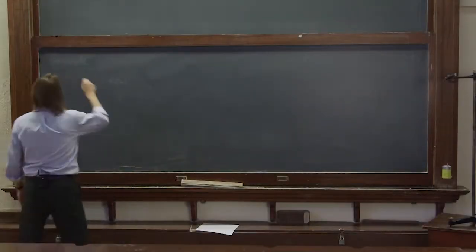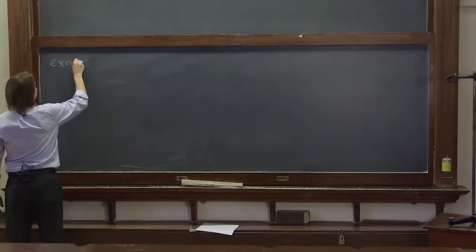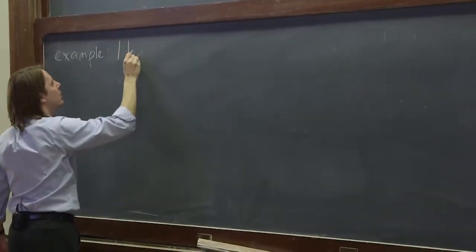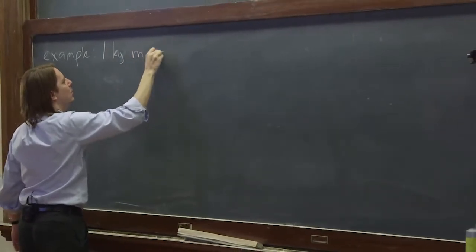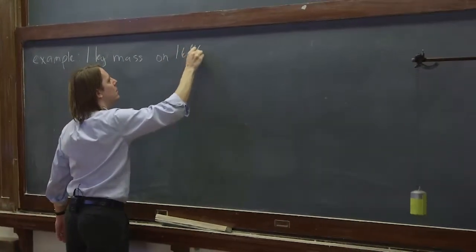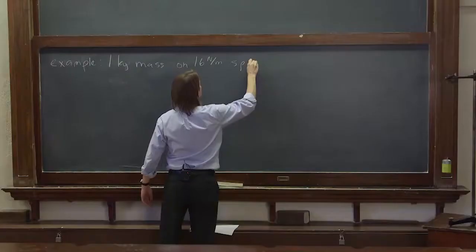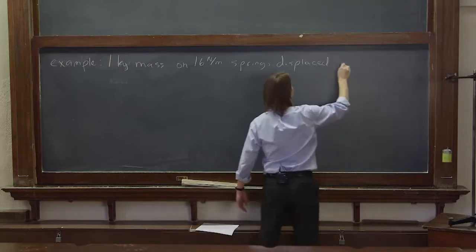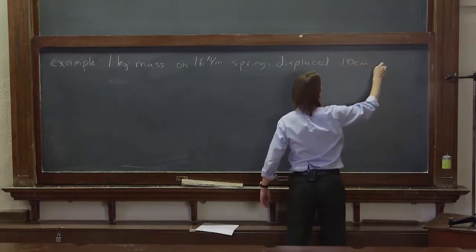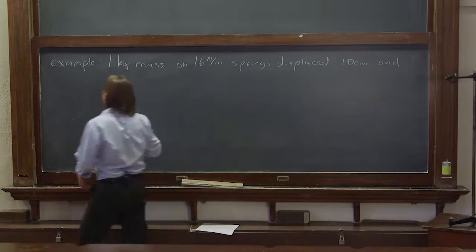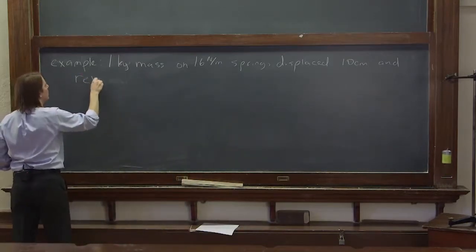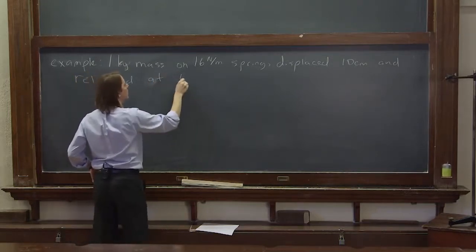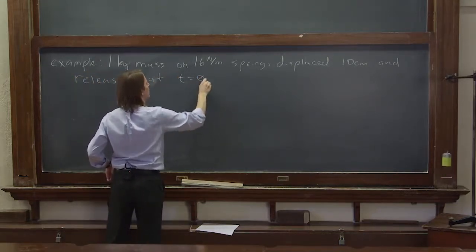So now let's see how we use the solution to solve an example problem. Let's imagine a one kilogram mass on a 16 Newton per meter spring displaced 10 centimeters and released at time equals zero.